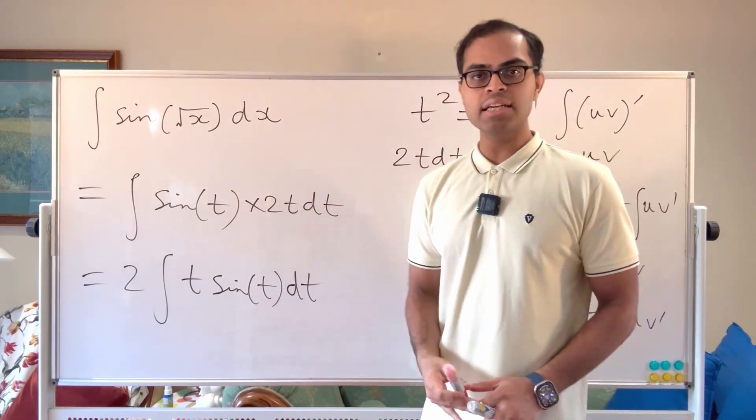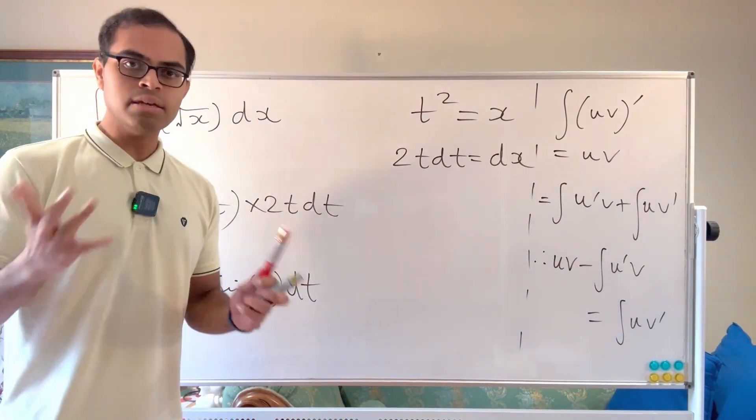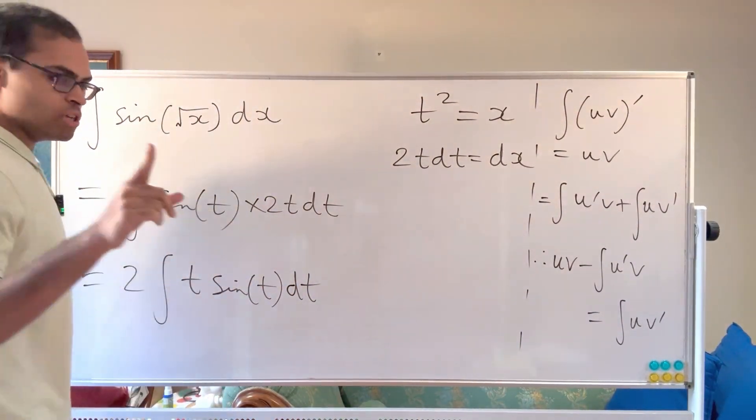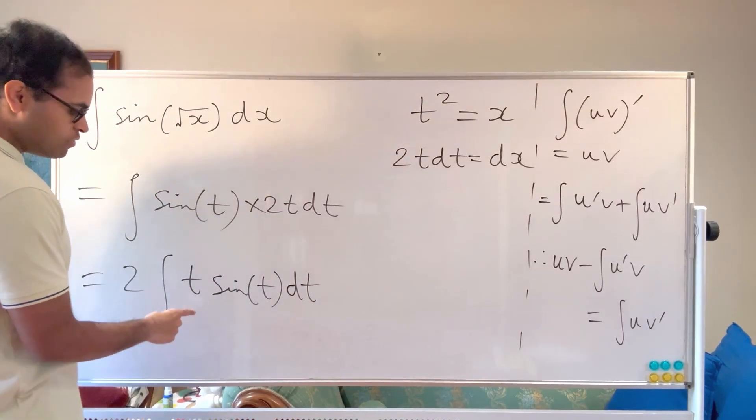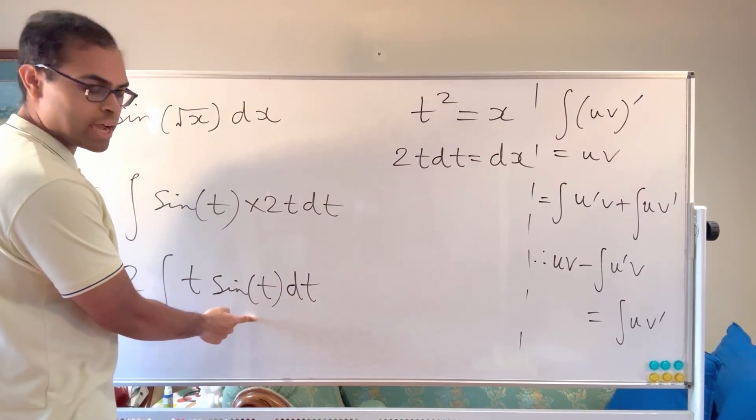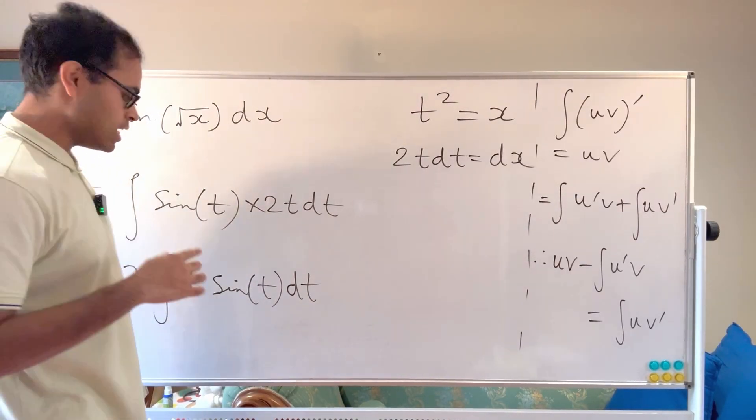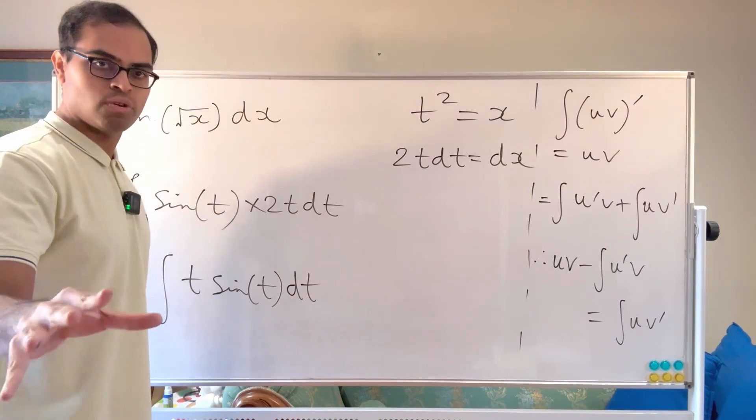So in our example here, we have t and sine t. The idea is can we differentiate something and integrate the other thing to make it simpler? Now, if we try to, I'm going to show you a wrong approach first. If we try to integrate the t and differentiate the sine, the sine will become cosine. But integrating the t is going to be t squared by two, which is getting on the complicated side. We're getting a higher power of t, which we don't want.